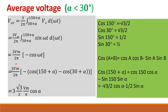As the waveform changes, the average voltage expression changes too. This expression is applicable only for R load with alpha less than 30°. For the second case, the average voltage expression will be different.